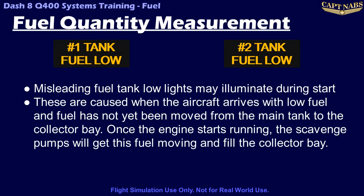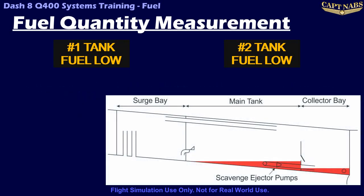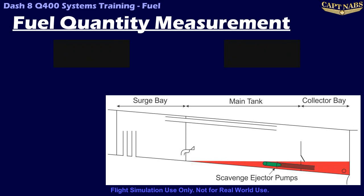Even though the airplane was refueled, fuel does not begin flowing into the collector bay in a big way until the scavenge pumps are working at full speed, which requires the engine fuel pump to be turning, which only starts when the engine is starting. If these spurious caution lights happen, they should go away very quickly once the fuel starts flowing.